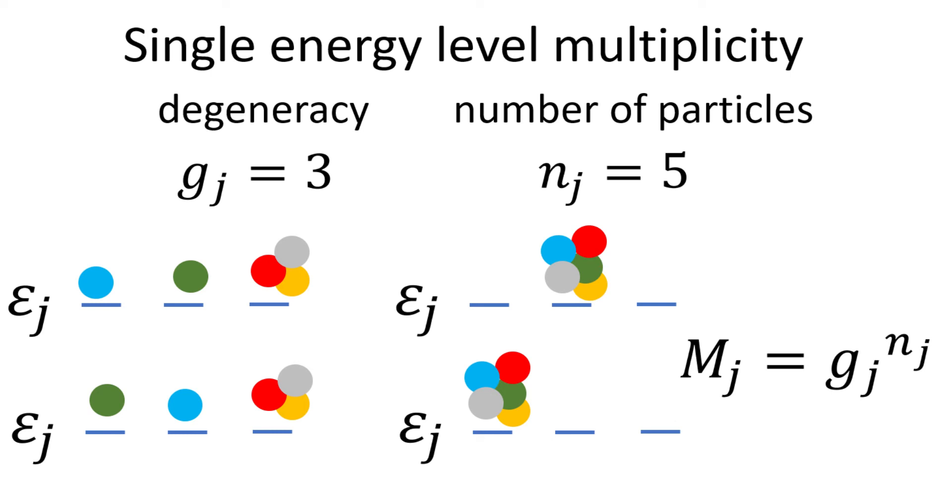Thus each of the n particles will have g ways of arranging itself, then the total multiplicity, or the total number of ways of arrangement will be g to the power of n.